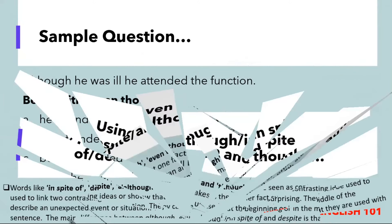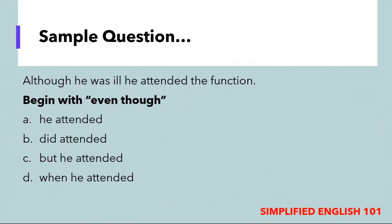Let us look at an example. The sentence reads: 'Although she was ill, he attended the function.' The instruction says to begin the sentence with 'even though.' Remember, when we use 'even though,' it should be followed by a subject and then a verb. The options given are: he attended, did attended, but he attended, when he attended. The only viable option is 'he attended.' The sentence when reconstructed would be: 'Even though he attended the function, she was ill.'